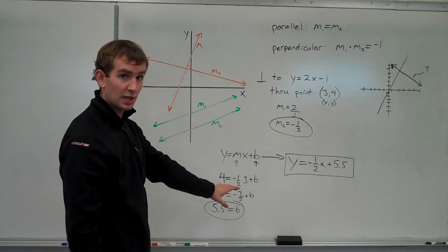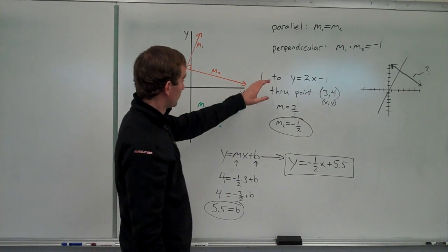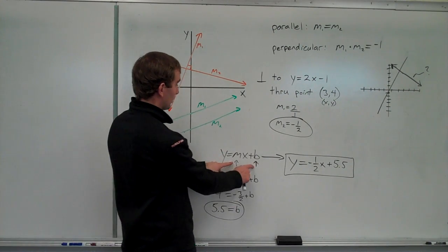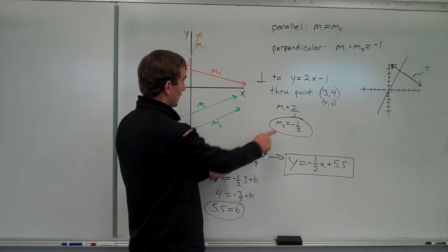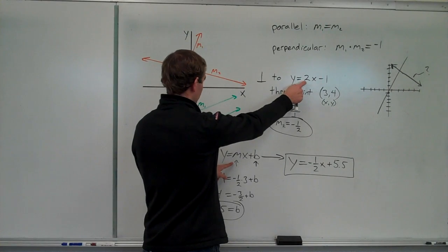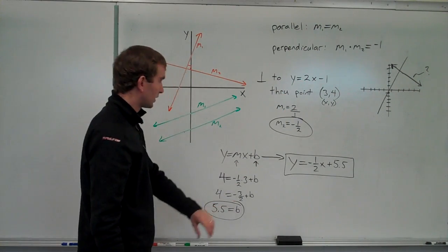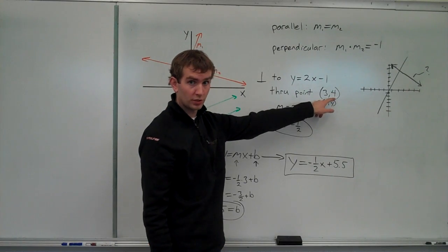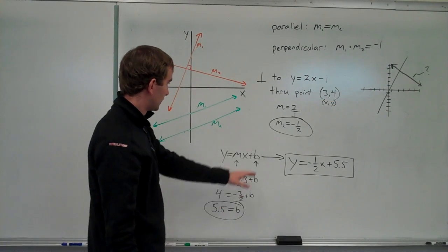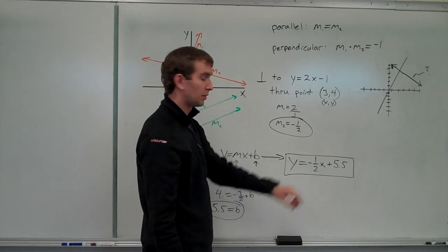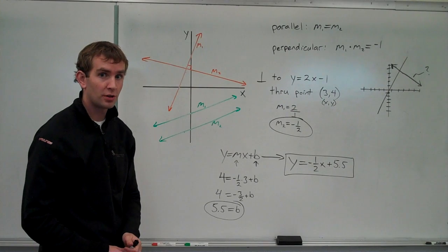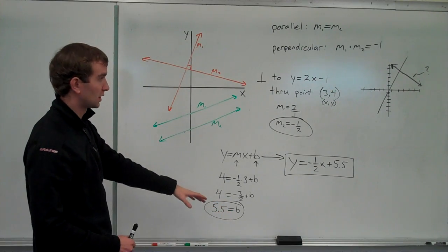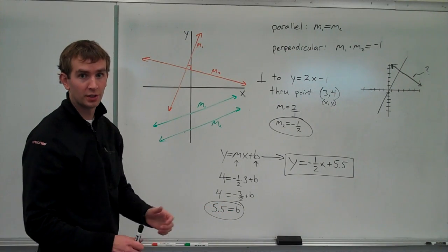Quick review, because this is a lot of steps. To write the equation of our line we needed y equals mx plus b — so really we needed m and b. We found m using the negative reciprocal because we know we're perpendicular to that slope. We found b by plugging in everything we could: the slope we just found, and the x and y coordinates of the point we go through. We found b, then wrote the equation using m and b. That covers the main types of problems you'll see for parallel and perpendicular lines in this chapter of geometry.